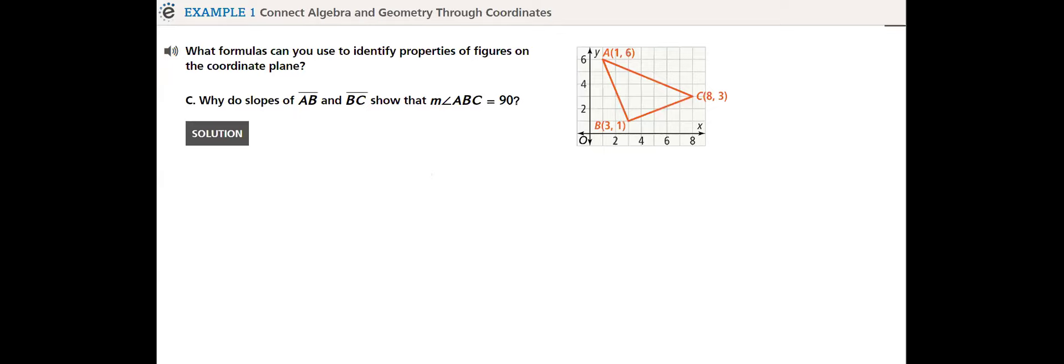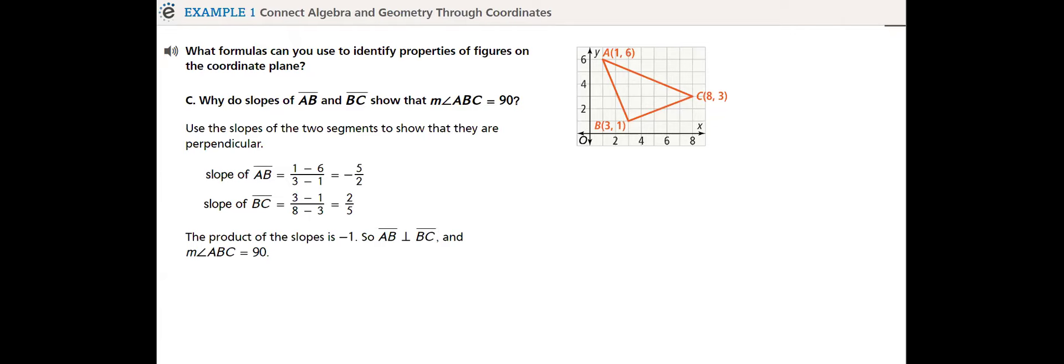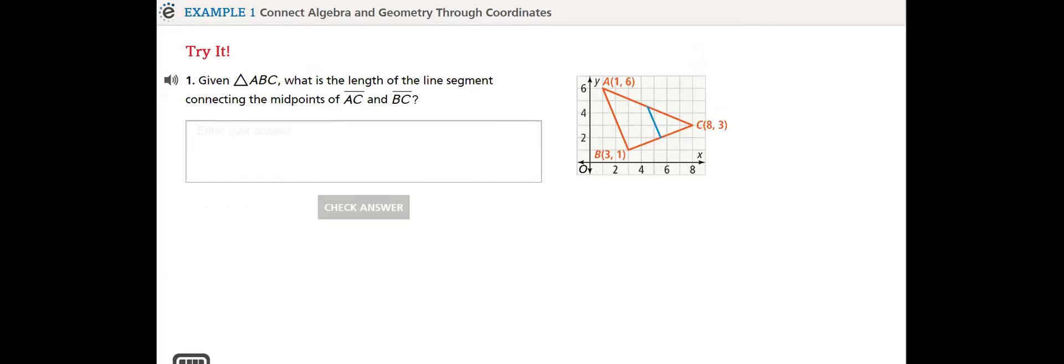Why do slopes of AB and BC show that angle ABC equals 90? To relate the slope of lines, we know the slope of parallel lines is equal. The slope of perpendicular lines has a product equal to negative one. We find it by multiplying them by each other, and the answer should be negative one. How do we find it? Flip and reverse. What's the length of the line segment connecting midpoint of AC and BC?